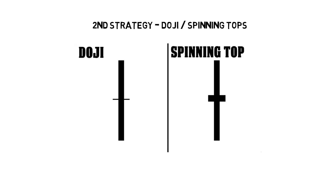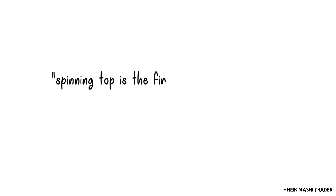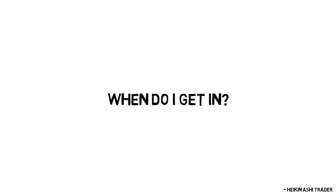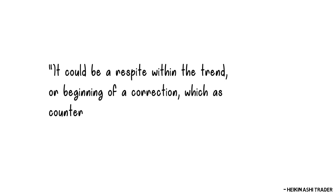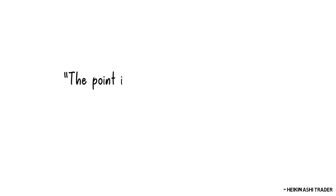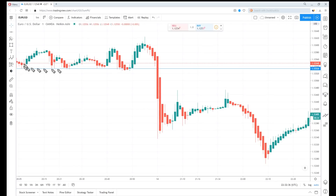The second strategy example is colour trend or trend reversal using doji and/or spinning top candles. A doji signals a balance between buyers and sellers and often heralds a trend change. A spinning top is the first indication that the current trend will weaken. If either a doji or spinning top arises, this indicates to the author that current momentum is at least temporarily over — it could be a respite within the trend or the beginning of a correction. Trading and scalping is a probability game, and you will never know in advance with 100% certainty. Personally, I don't recommend trading with doji or spinning tops because these patterns appear far more commonly on smaller timeframes and may result in mixed signals. Don't take my word for it — test it yourself.